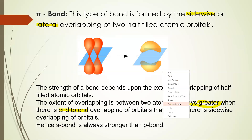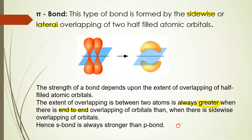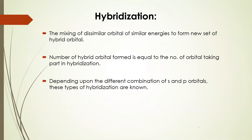We can call sigma bonds as S bonds and pi bonds as P bonds. Next, how hybridization takes place. Hybridization means the mixing of dissimilar orbitals — the mixing of different orbitals of similar energy to form a new set of hybrid orbitals. The number of hybrid orbitals formed is equal to the number of orbitals taking part in hybridization.